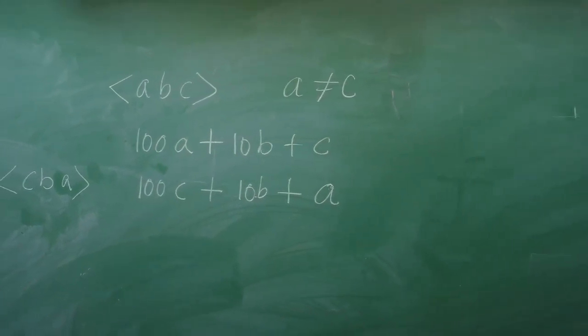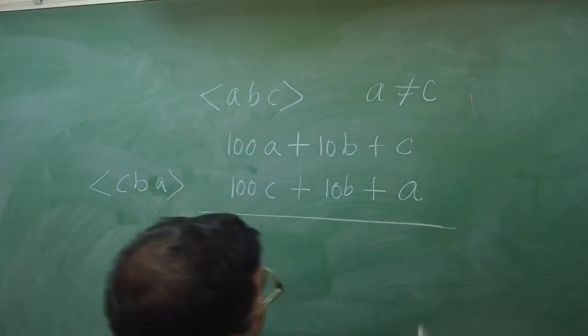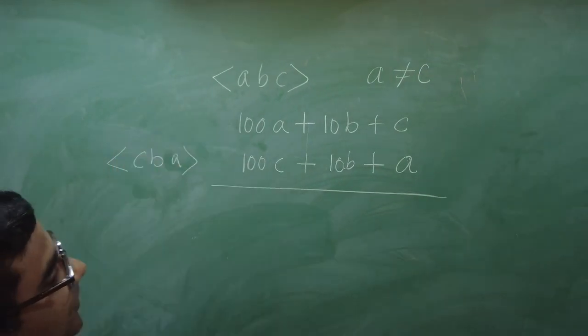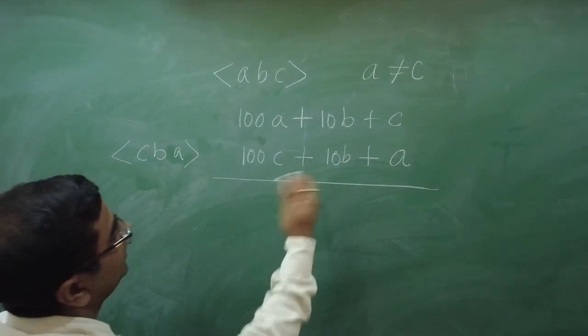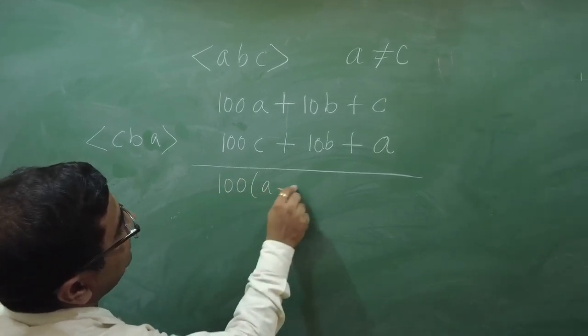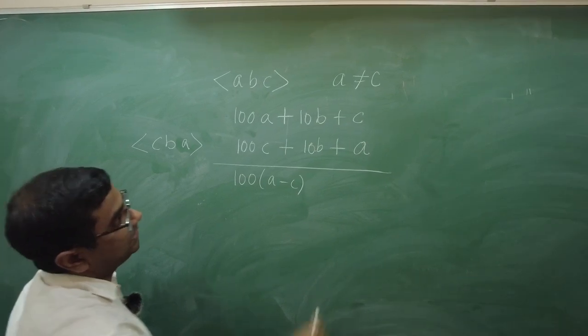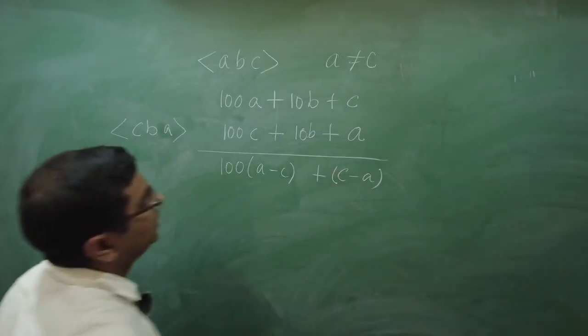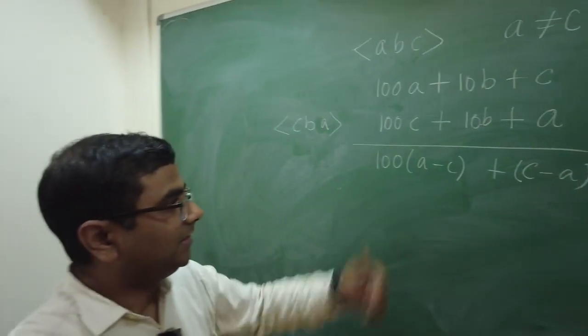Now, what did we do next? The third step was to take the difference. Right? Take the difference. Assuming this number was larger. So, we take the difference. What will we get? We will get 100 times A minus C. This 10B and 10B obviously will get cancelled. And then, it will be C minus A. Isn't it, guys?